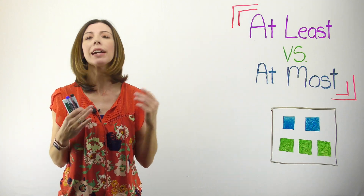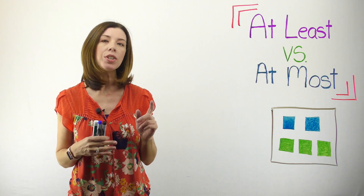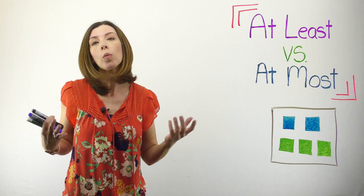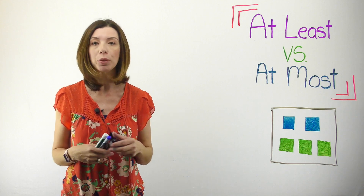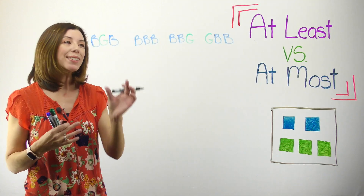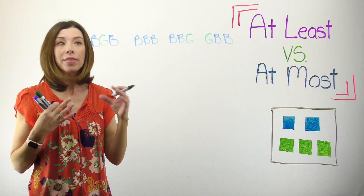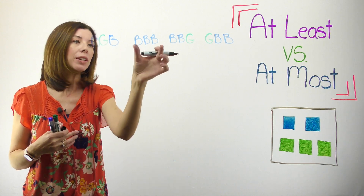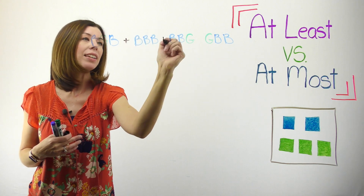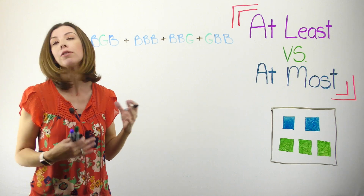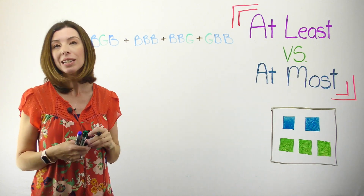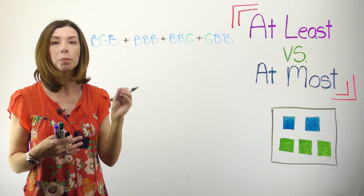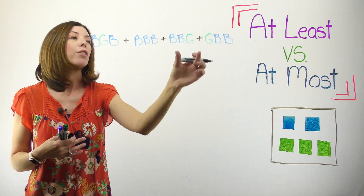Let's recap and think through how we solved this problem. The first thing we needed to do is list the potential outcomes where we win — our desired outcomes, in this case at least two blue cubes. Once I have my four winning outcomes, I find the probabilities for each scenario and then add them together. Because these are three individual cubes being pulled out, you multiply the probabilities for each scenario together, then sum all the scenario probabilities to get the total.